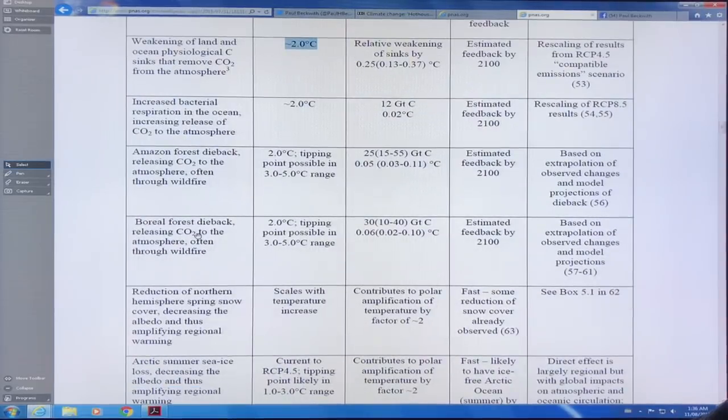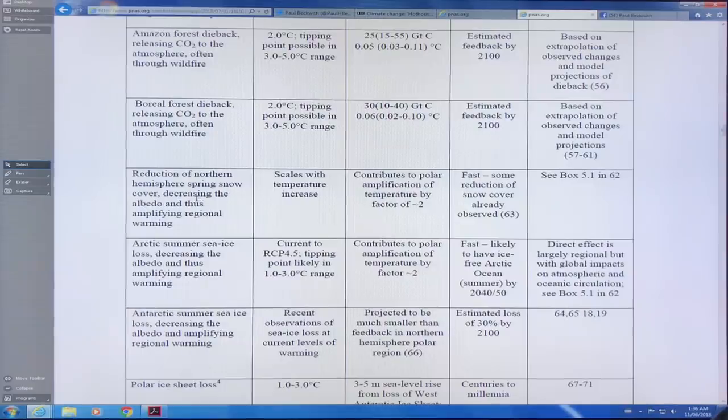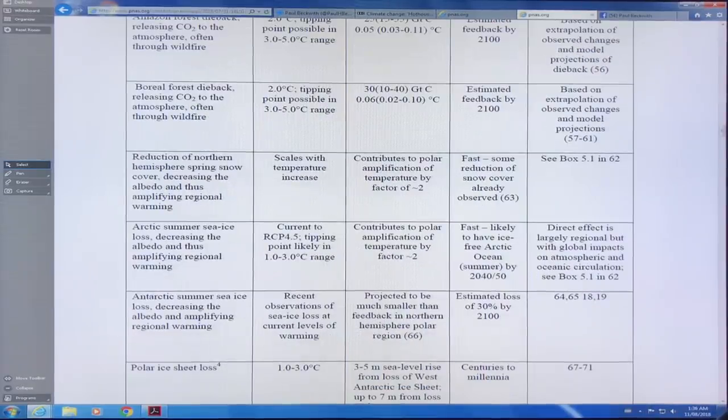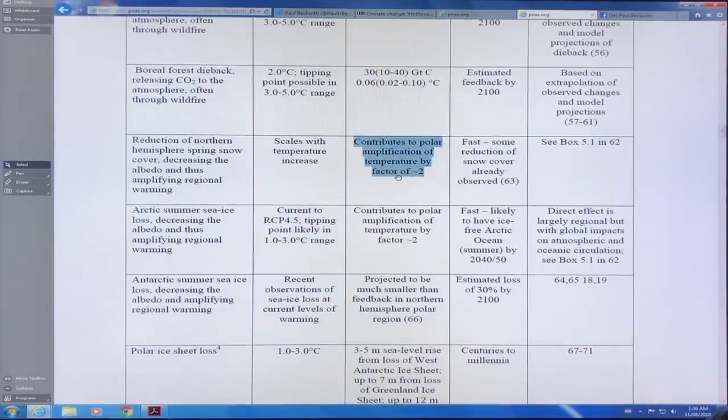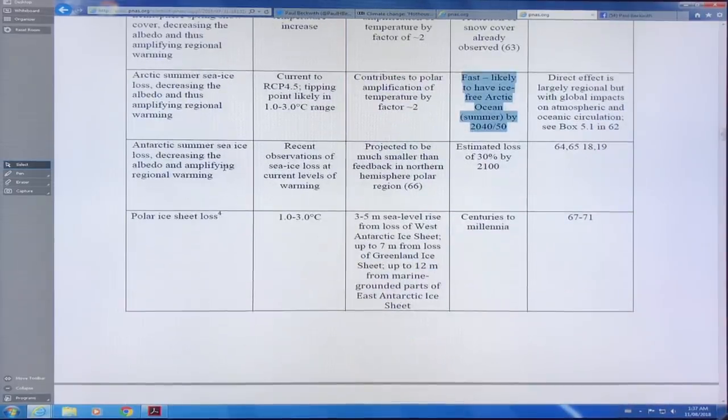Amazon forest dieback. Boreal forest dieback. Reduction of northern hemisphere spring snow cover. That's making it darker, decreasing the albedo. So you get more absorption in the Arctic, causing warming. It talks about how this contributes to polar amplification by a factor of two. Arctic summer sea ice loss. Once again, they say it's fast process, but likely to have ice free Arctic Ocean summer by 2040 to 2050. Let's see if it happens in a few years by 2020, 2021, 2022.